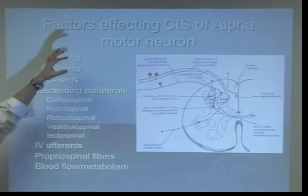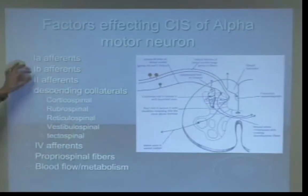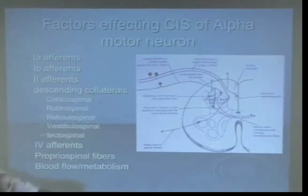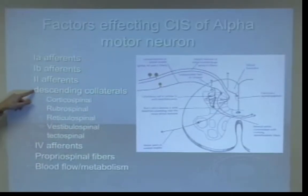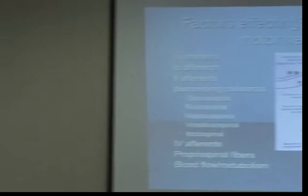The 1a afferents — these are things coming from muscle spindles. 1b afferents — these come from Golgi tendon organs. Type 2 afferents are joint mechanoreceptors. Descending collaterals: when the corticospinal tract comes down, it doesn't just go to the alpha motor neuron — it sends off things to the reticular formation, to some cranial nerve nuclei, a few things to the cerebellum, and over to the basal ganglia. The information is going to multiple places — we have a multiple set of checks and balances.